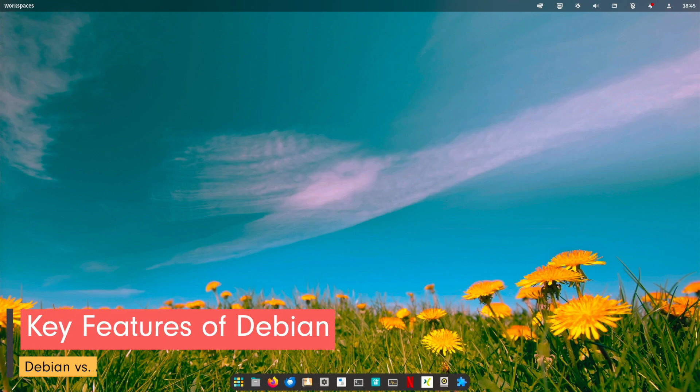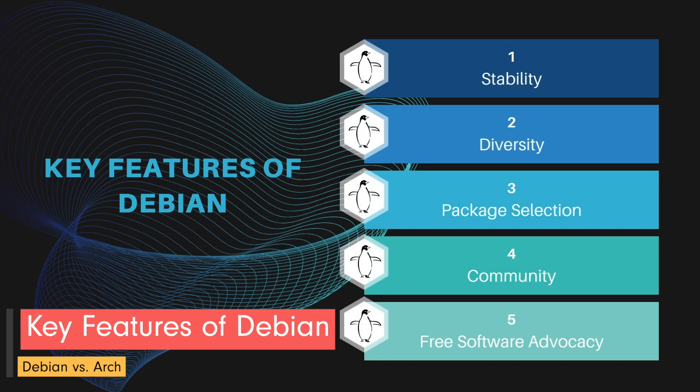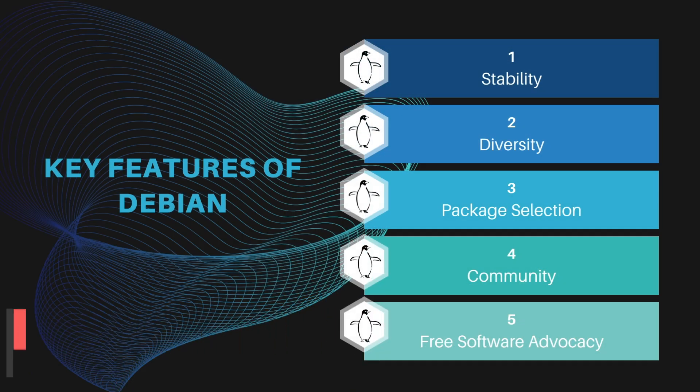Let's check the key features of Debian. Stability: Debian is renowned for its rock-solid stability, making it a preferred choice for critical systems. Each release undergoes rigorous testing before earning the stable tag, ensuring a dependable platform.